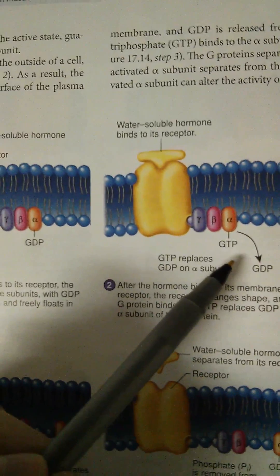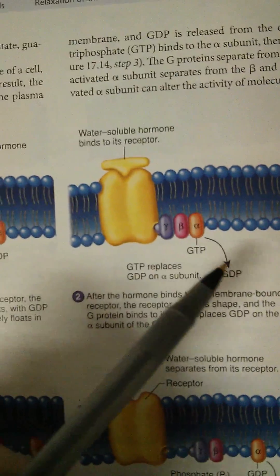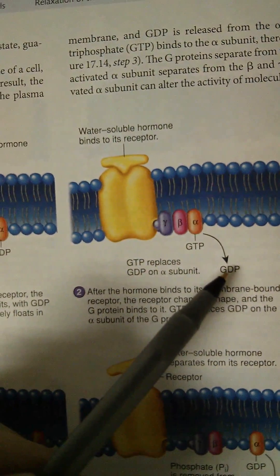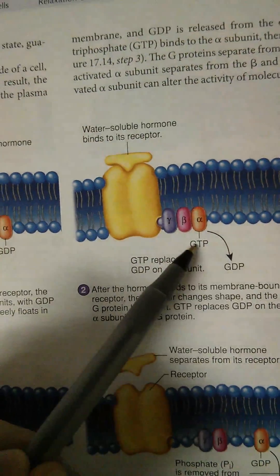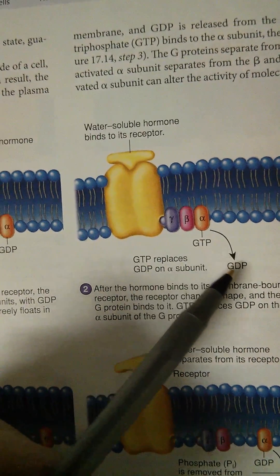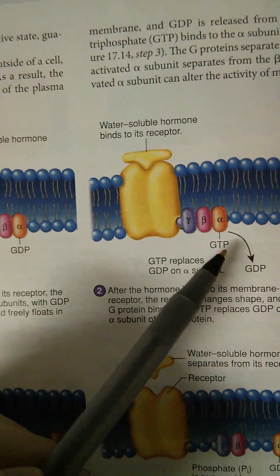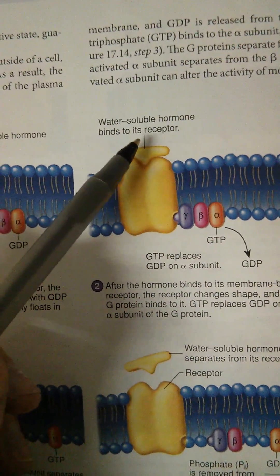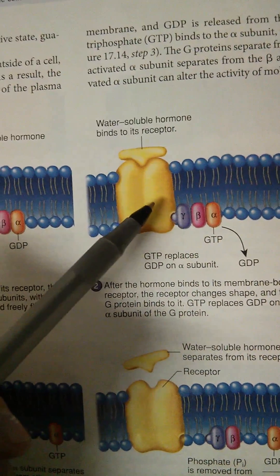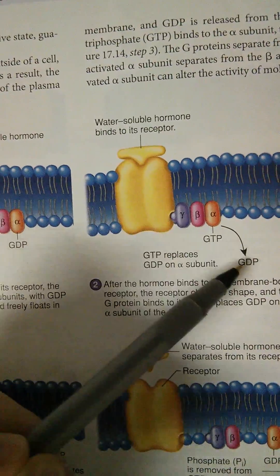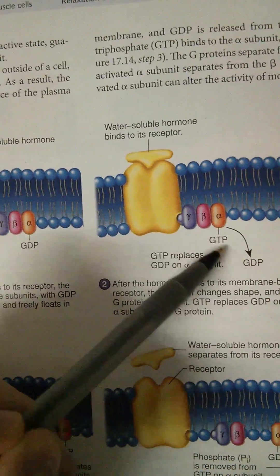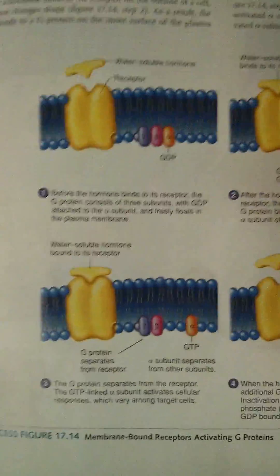You can think of it as adding energy because GDP stands for diphosphate, and T stands for tri. So it's going from 2 to 3. So I like to think of it as it gained energy when the hormone bound to the receptor. So it gains an energy, so it went from 2 to 3, from di to tri. That's just how I like to think of it.